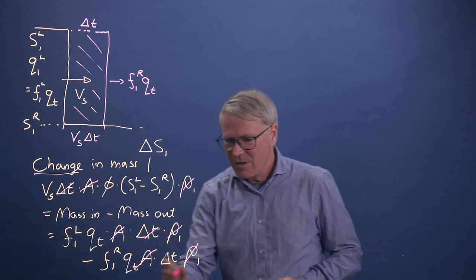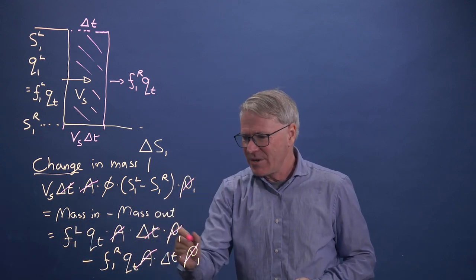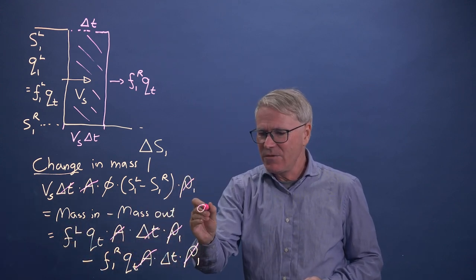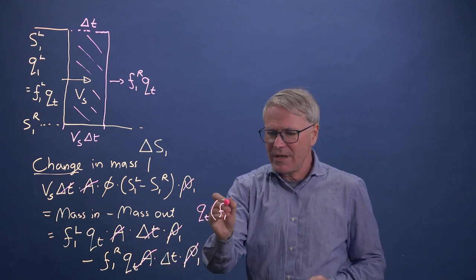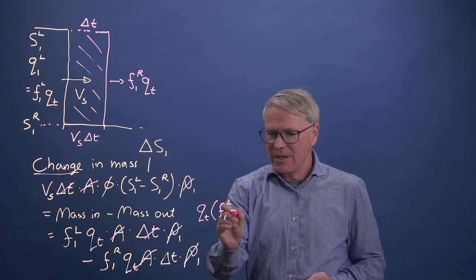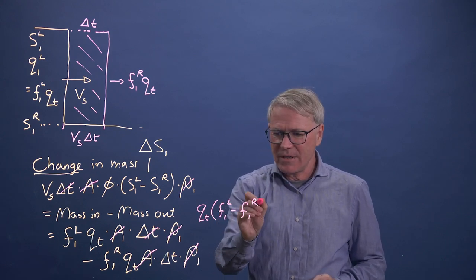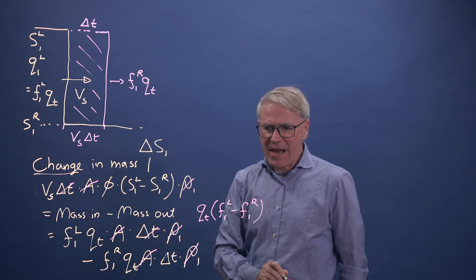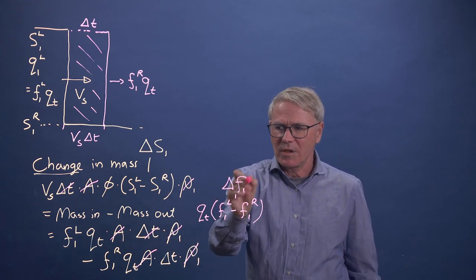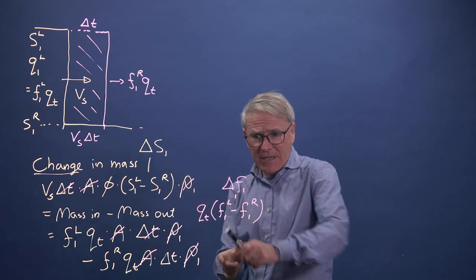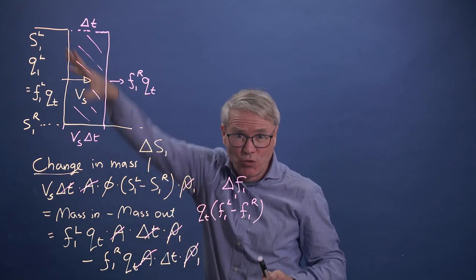This term, all that we're left with, if we look at it carefully, is QT times F1 left minus F1 right. And that is, we can write that as delta F. Just as we had delta S. And this is positive, left minus right, as drawn.